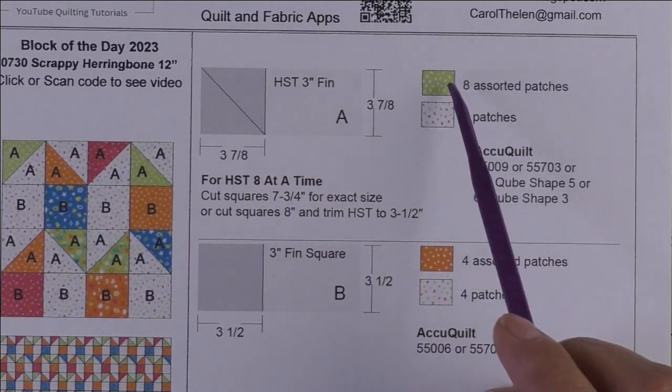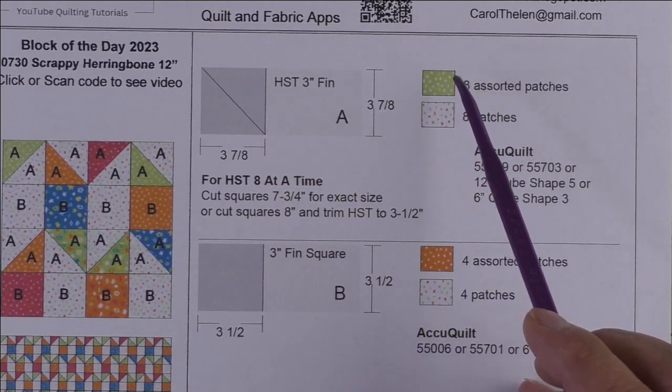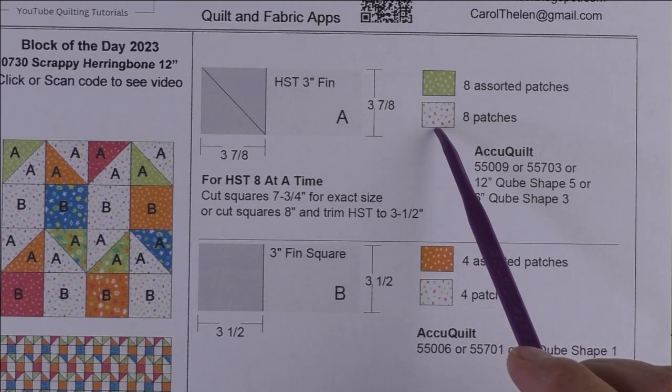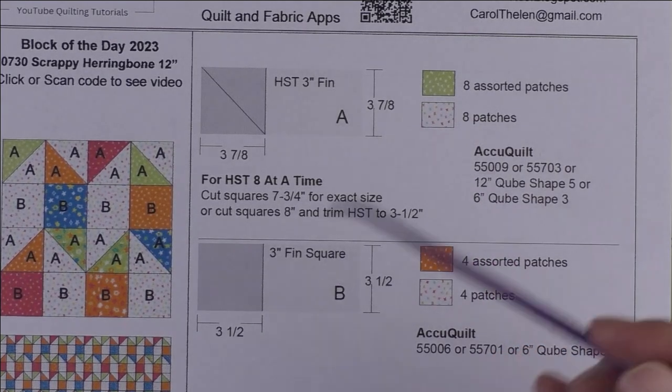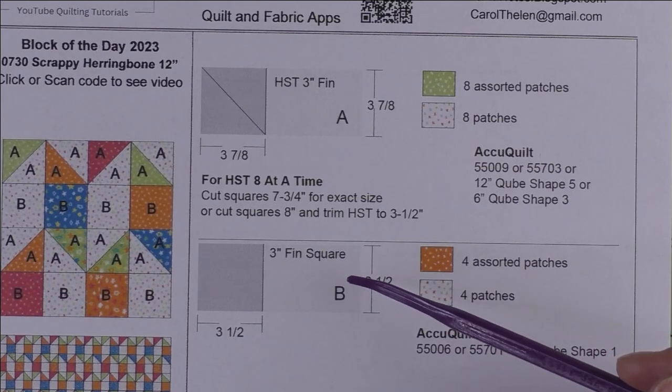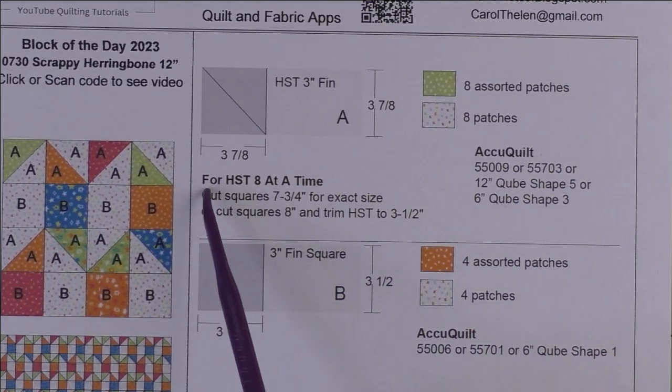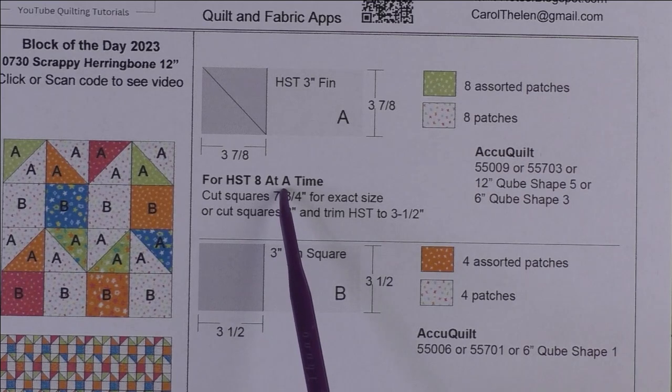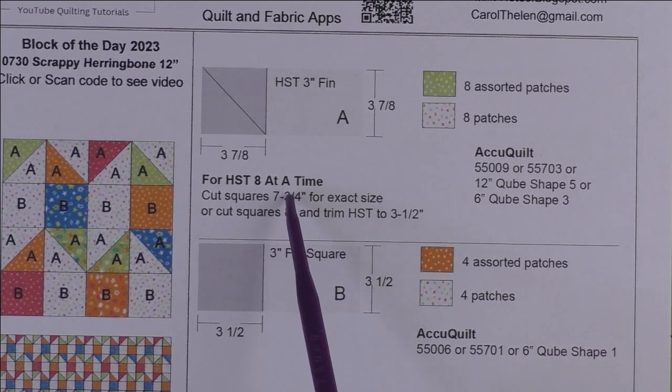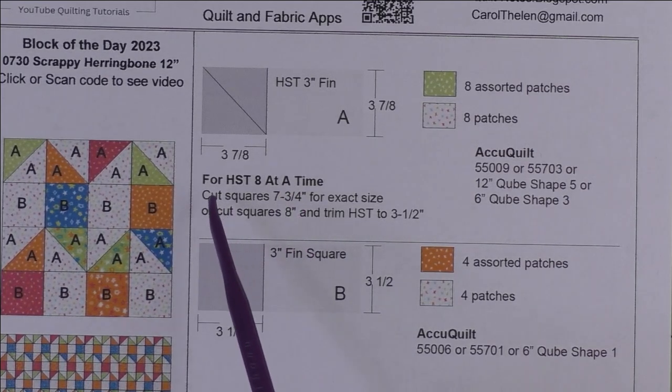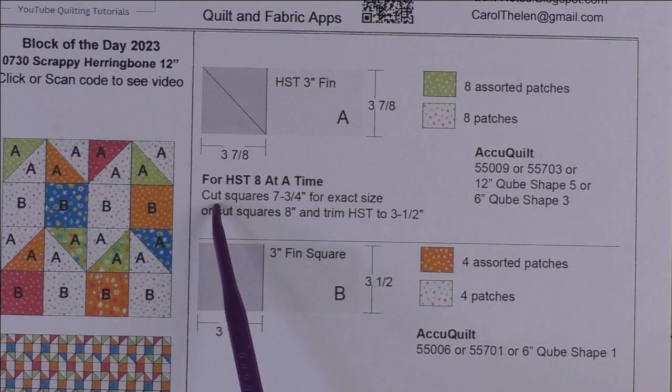We'll need eight assorted patches of the accent fabric and eight patches of the background fabric. Since this is a scrappy quilt, you might want to do the half square triangles eight at a time. That will go much faster. If you do that, then it tells you what size you'll cut squares.